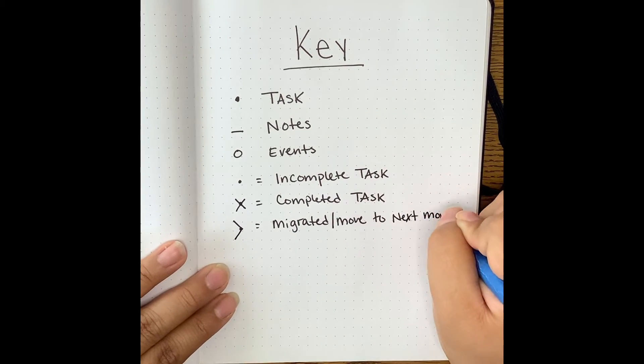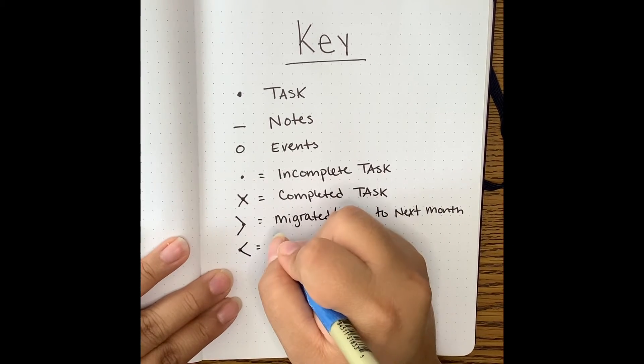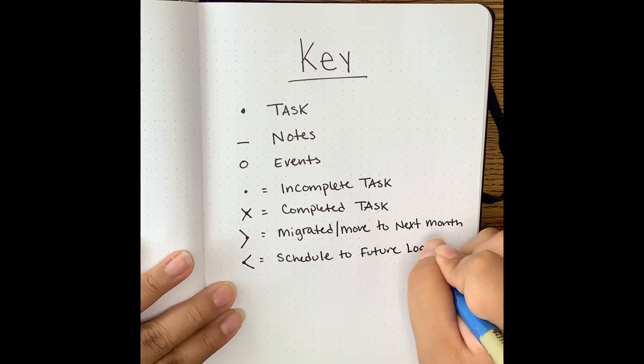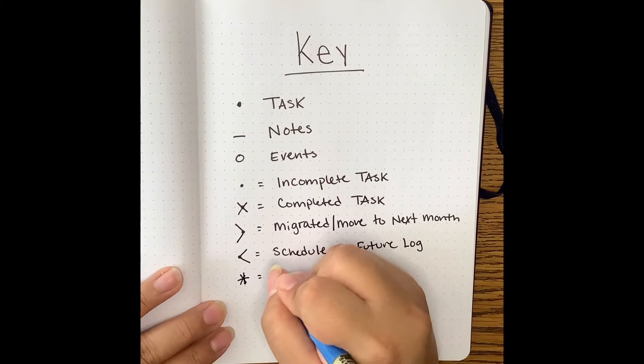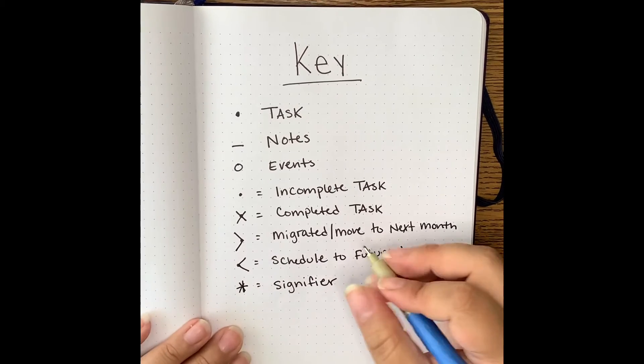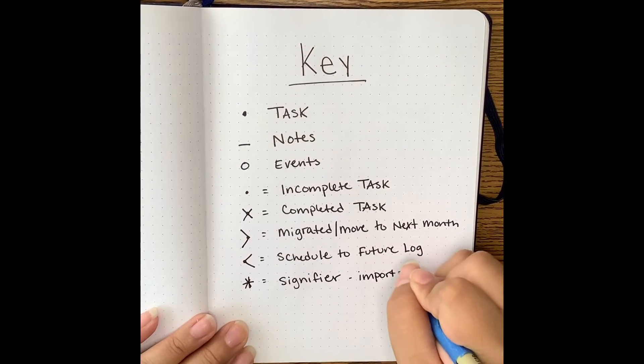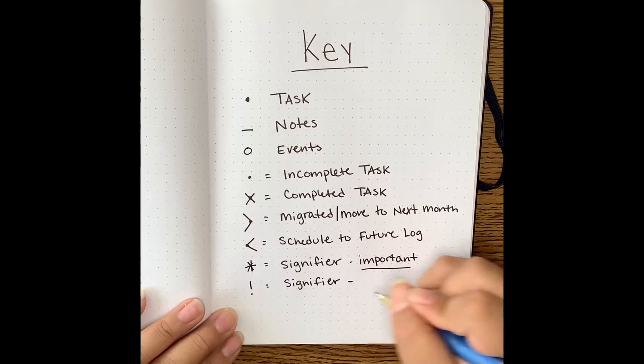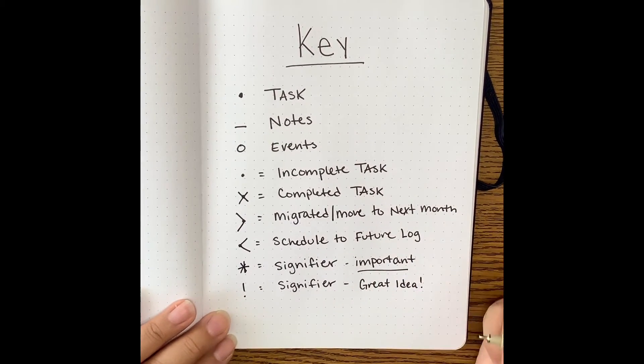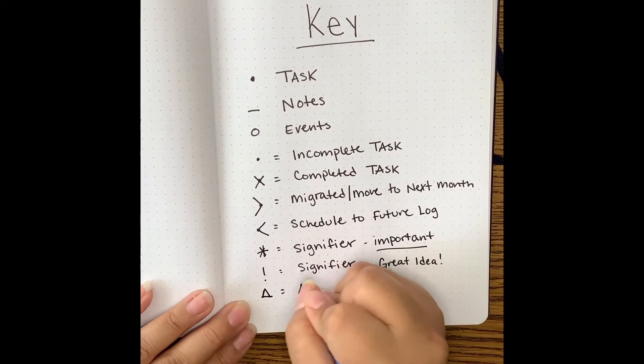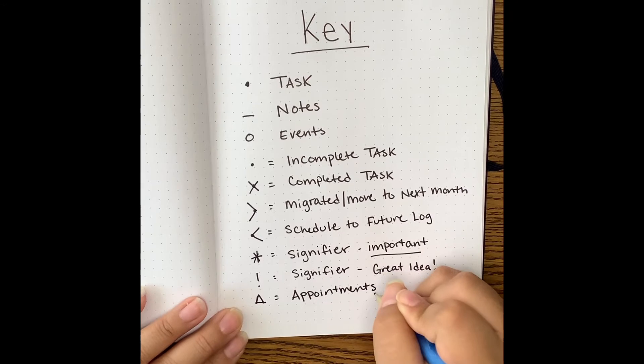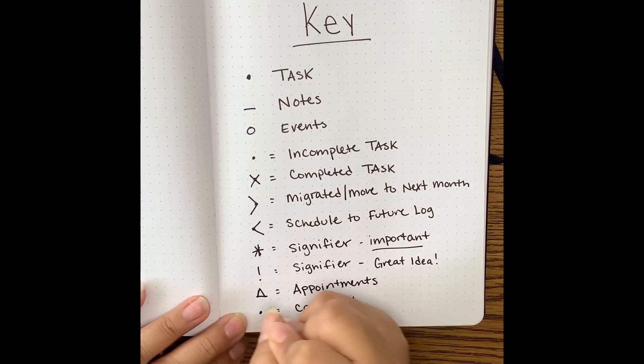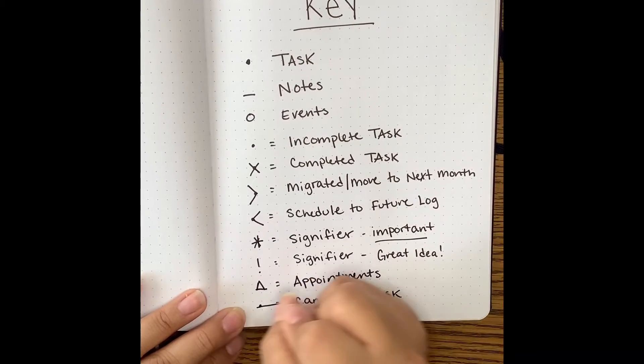At the end of every month, go back into your notes and find the remaining incomplete tasks. From here, you can reflect if you can move or migrate a task to the next month, which is indicated by a right pointing arrow, or schedule it even further into your future log, which is indicated by a left pointing arrow. You can also add signifiers, which are asterisks or exclamation points, that show that a task is either very important or it's a great idea. This is what can help you be mindful of your tasks and really assess what needs to be done so you can go over things quickly, see what can wait, and also what is no longer worth your time. You can also create appointments or cross everything out to cancel the task.